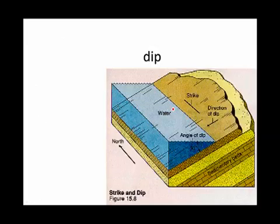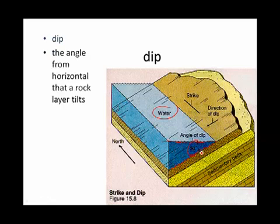Here we have a horizontal surface represented by the top of the body of water. And you can see that the angle from that horizontal surface and the tilting rock layers is 30 degrees. So once again, the dip is the angle from the horizontal that a rock layer tilts.